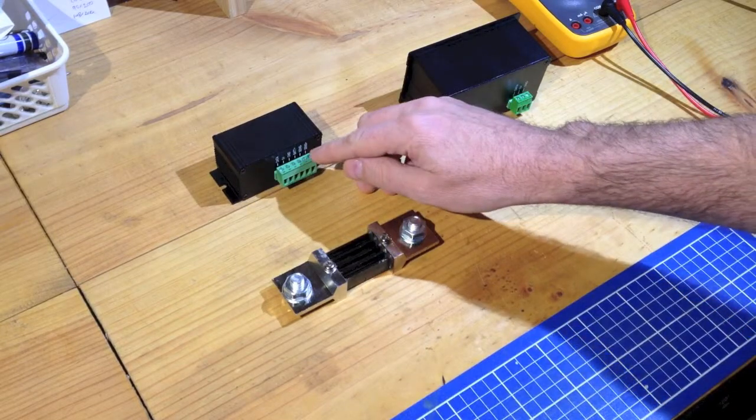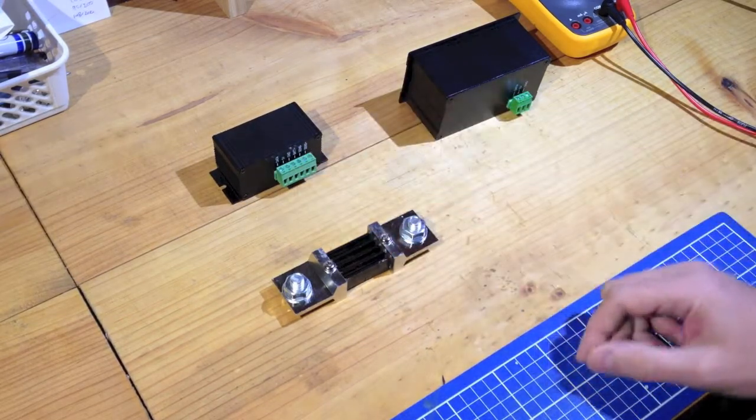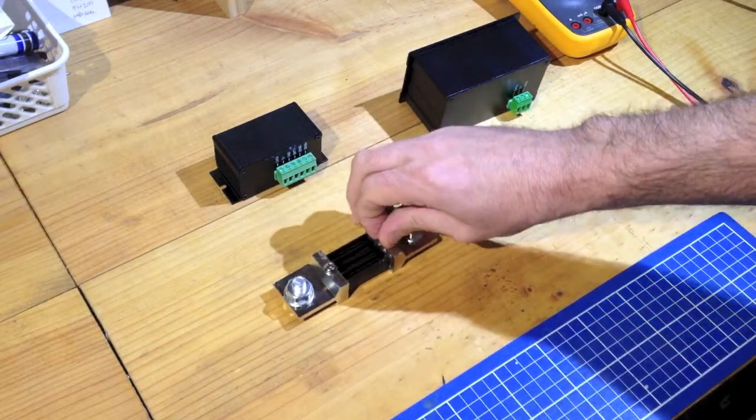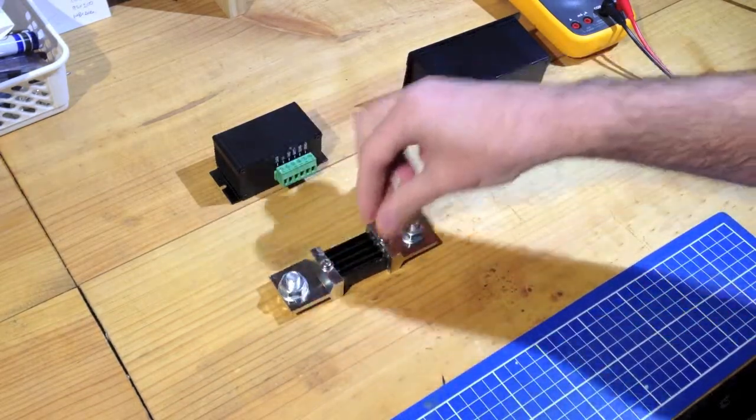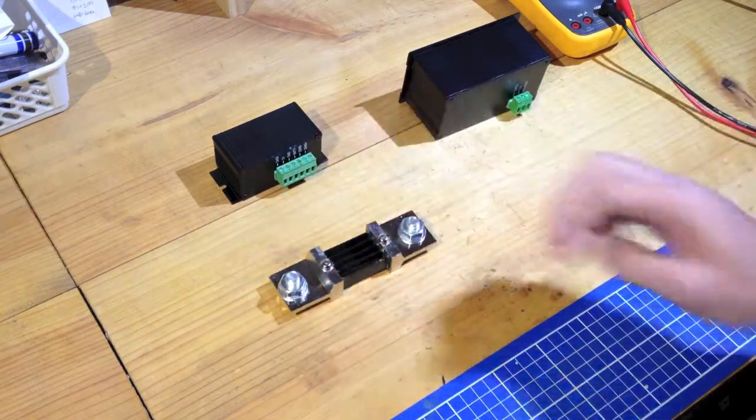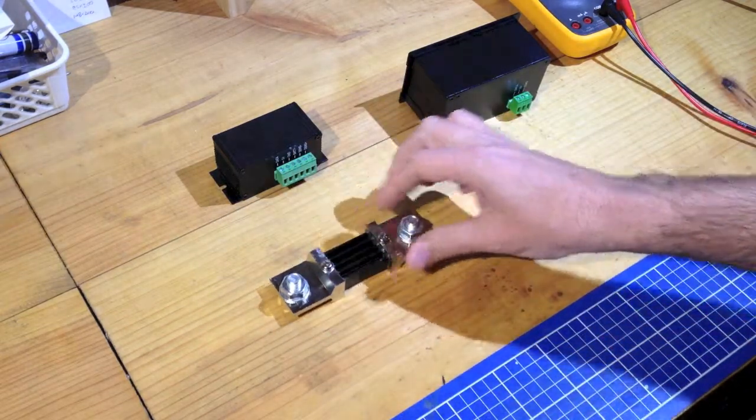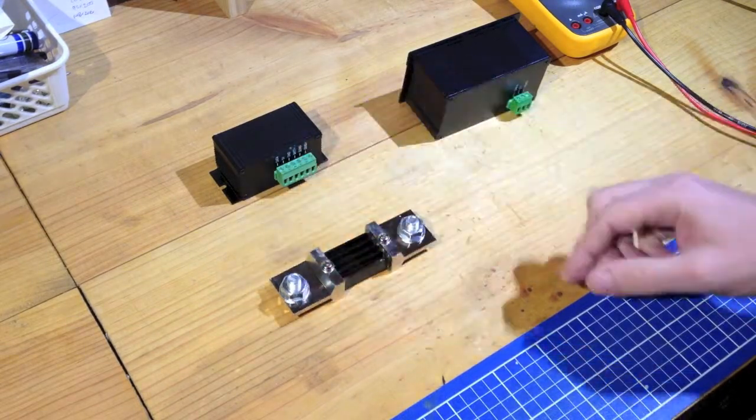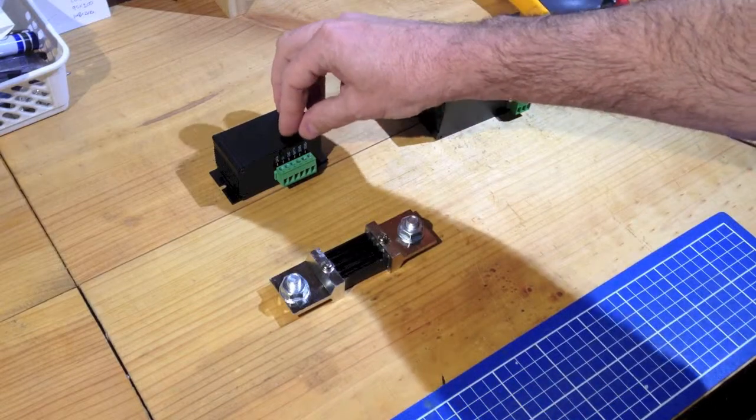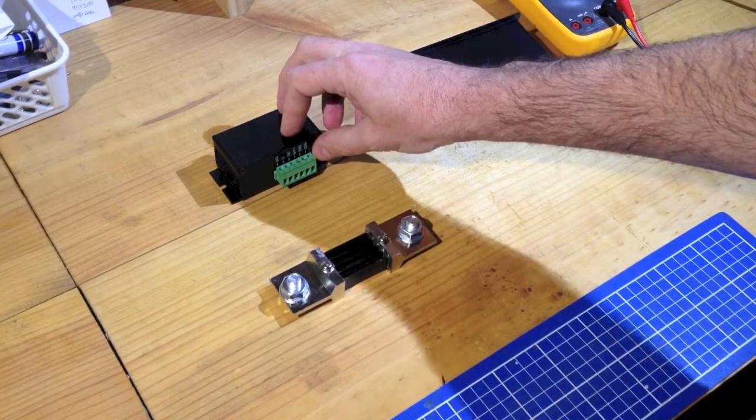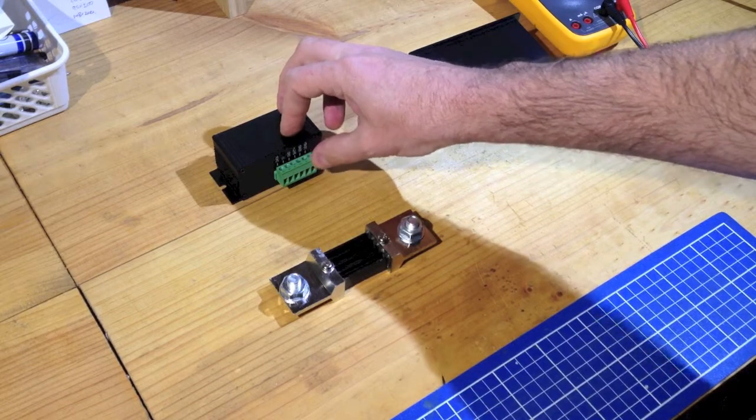And these two here are sense positive and sense minus. What they are is they're designed to be installed onto these screw terminals here, or they could be equally just there on the shunt. But that's the screws provided for that purpose. You just run a couple of wires from the shunt to the sense positive and the sense minus. When it says sense positive and sense minus, what that refers to is which end of the shunt is the more positive, and which end of the shunt is the more negative.